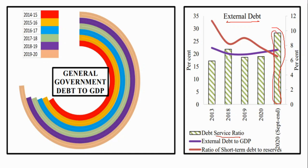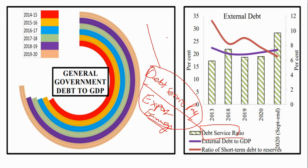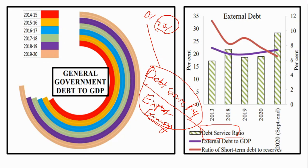What is the debt service ratio? It is basically debt service payments — including both principal and interest — divided by export earnings. The lower this ratio, the better it is for the government and the country. The next indicator is external debt to GDP, which is around 8% — quite low. The third is the ratio of short-term debt to reserves. All three indicators together show the strong position of the government related to its external debt.